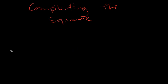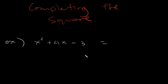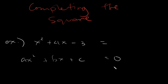Let me show you an example before we proceed with the actual process. Say we have x squared plus 4x minus 3. This given is just a quadratic trinomial in the sense that you have ax squared plus bx plus c equals 0. But when we talk about a perfect square trinomial, not all quadratic trinomials are PSTs or perfect square trinomials.